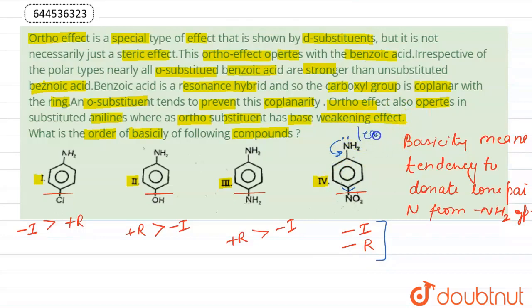And this compound would be least basic. So compound four is least basic. At number two we have compound one. Here we have two effects: minus I and plus R, but minus I is dominating. Minus I means electron withdrawing effect.